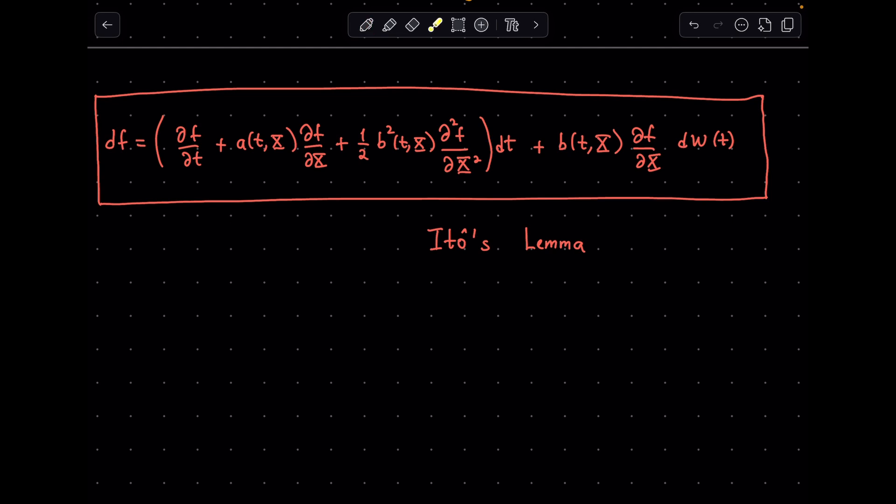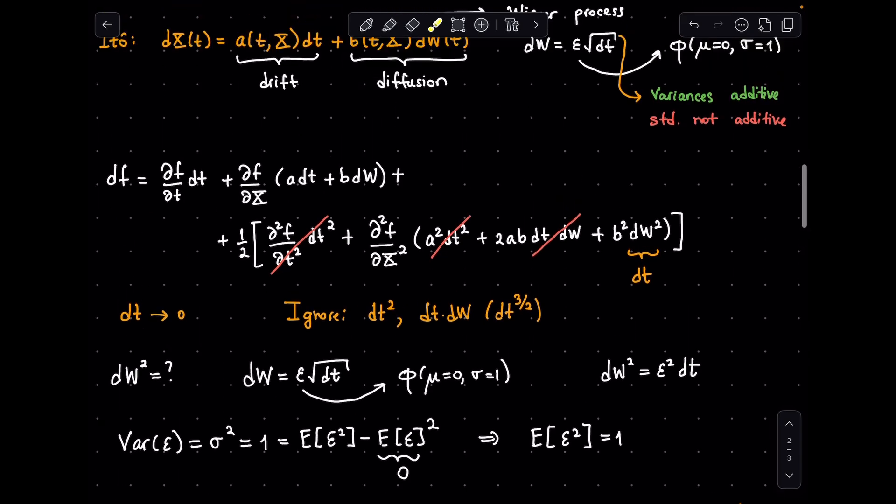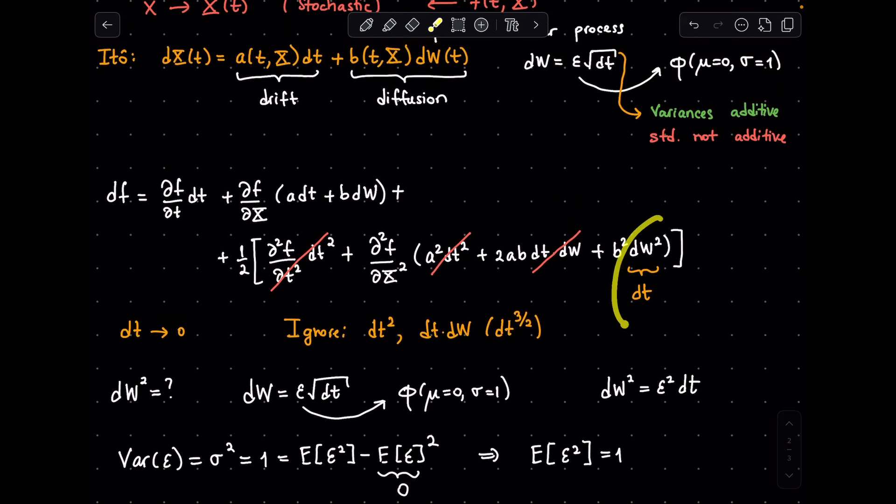So to recap, Ito's Lemma gives us an expression for the total derivative of a stochastic function f, which depends on an Ito process, which is a general drift-diffusion process. The key point is that, unlike in the ordinary calculus, some quadratic-looking terms survive until the end, which end up changing how the derivative looks.